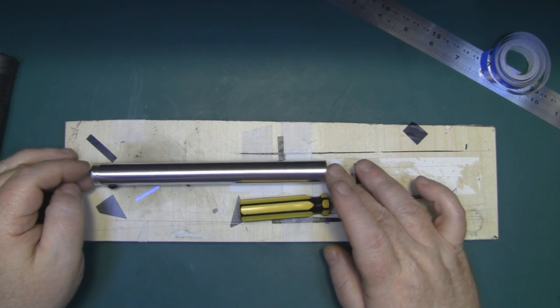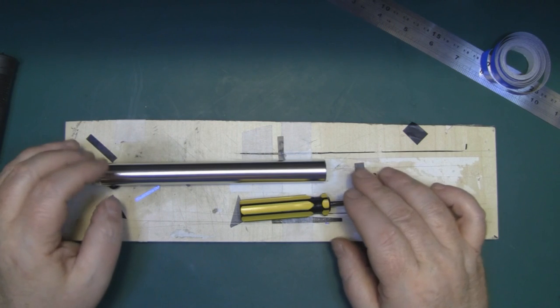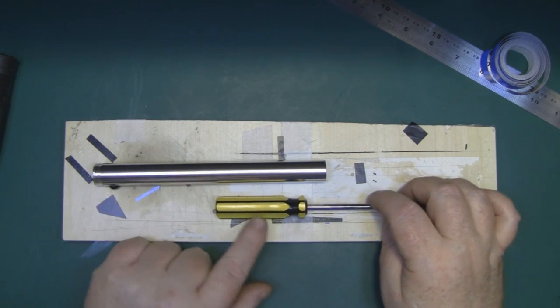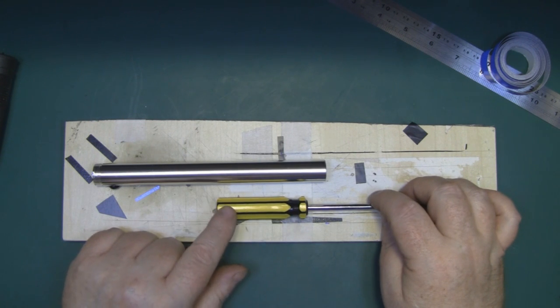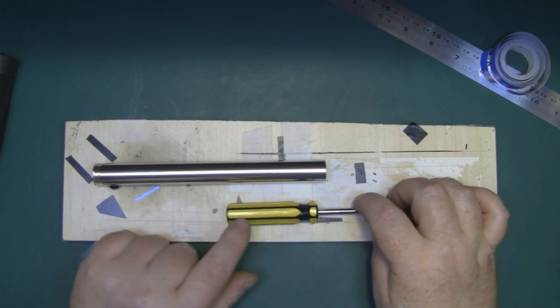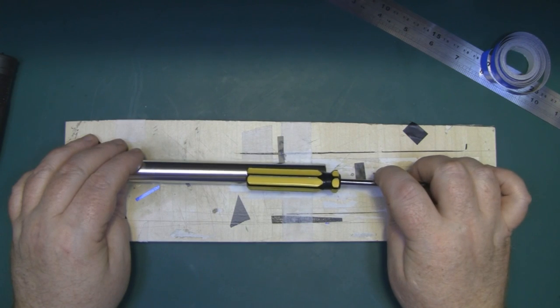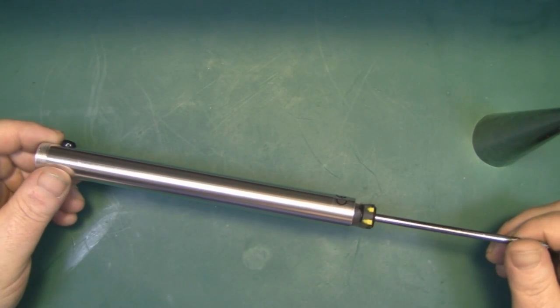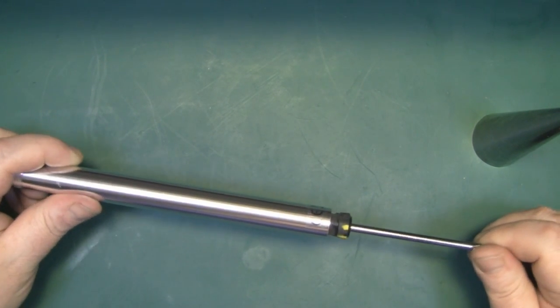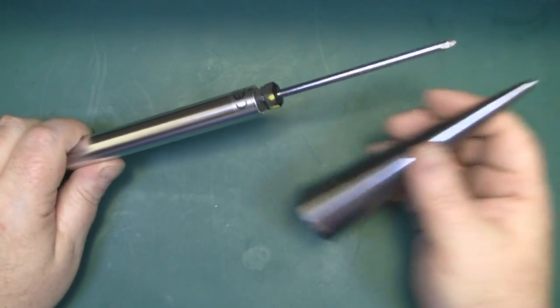So the first thing you want to do is get your tube and your donor screwdriver, and you want to get one with a fairly thin handle because we're going to grind away at the sides of this handle to bring the circumference down slightly so it will fit inside the tube. So I've ground down the handle of the screwdriver so it fits inside the tube now.